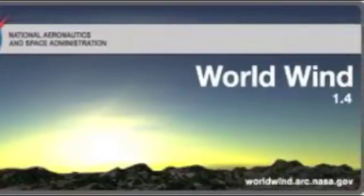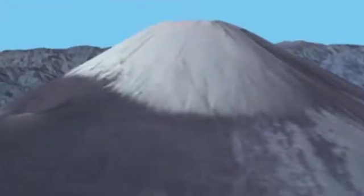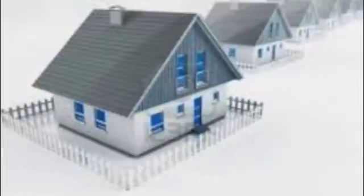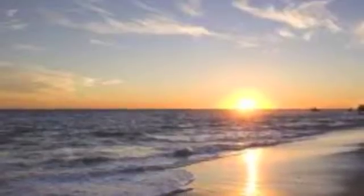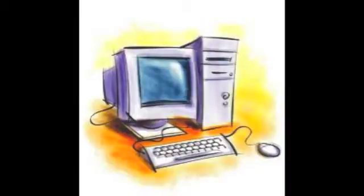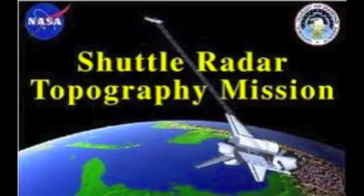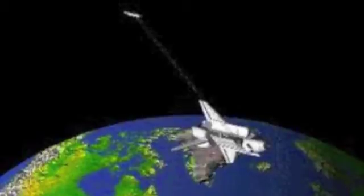Landsat 7 is a collection of images at 15 meters per pixel resolution. Any changes and updates are automatically inherited by Worldwind. Landsat 7 makes it possible to see your own city, neighborhood, or landmarks in your environment. Worldwind only downloads what you see and stores a compressed copy on your computer. Combining Landsat 7 imagery with Shuttle Radar Topography Mission SRTM data, Worldwind can display a dramatic view of the Earth at eye level.